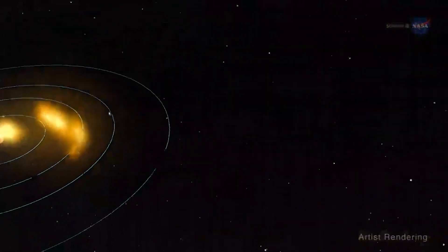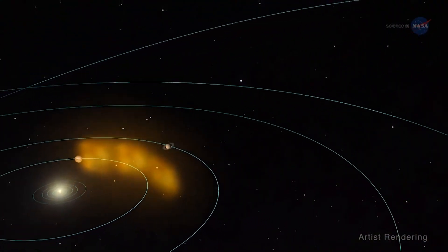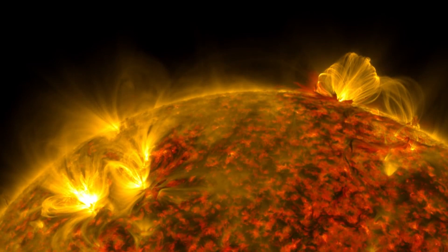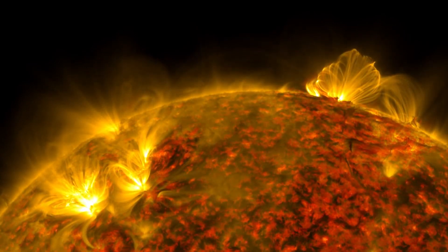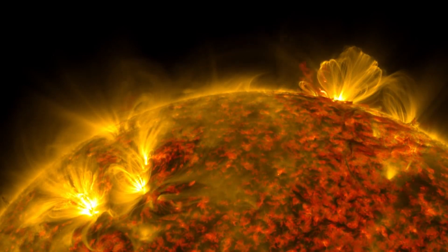This shockwave causes the solar wind to speed up and form a region known as the foreshock. But at the time, scientists didn't fully understand the significance of this discovery, and it wasn't until later that the true impact of the foreshock would be revealed.